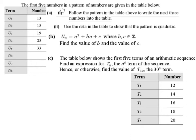The first five numbers in a pattern of numbers are given in the table below. Term 1 is 13, Term 2 is 15, Term 3 is 19, Term 4 is 25, Term 5 is 33.